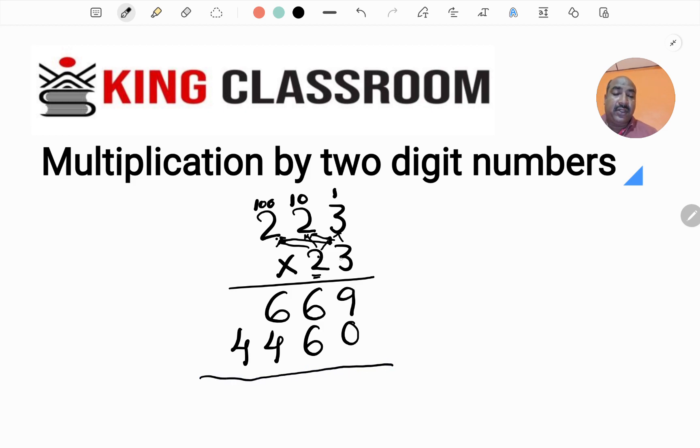Now we have to add these two results. First, multiply 3 from 1's place giving 669, then multiply 2 from 10's place giving 4460. We will add these results.